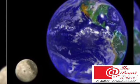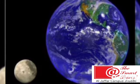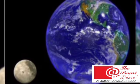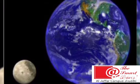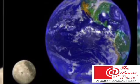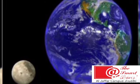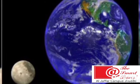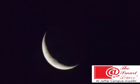It takes 28 days for the moon to go around the earth once. It is a satellite because it goes around the earth and not the sun. The moon appears to grow bigger and smaller during the month.